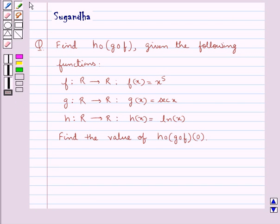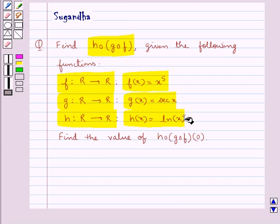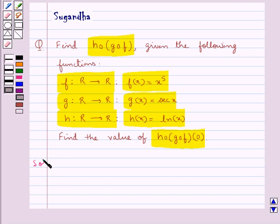Hello and welcome to the session. In this session we discuss the following question: find H∘G∘F given the functions F: ℝ→ℝ where F(x) = x⁵, G: ℝ→ℝ where G(x) = sec(x), and H: ℝ→ℝ where H(x) = log(x). We also need to find the value of H∘G∘F(0). Let's see the solution now.